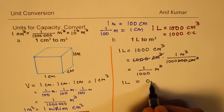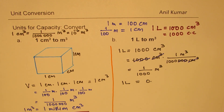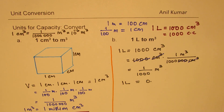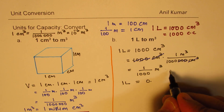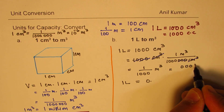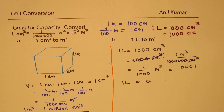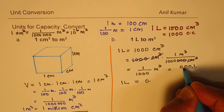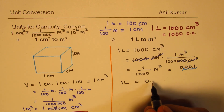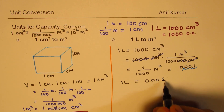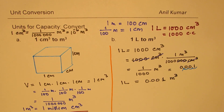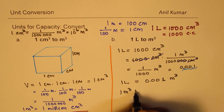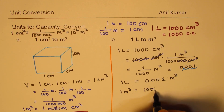Dividing by one thousand, we can also write one liter as zero point zero zero one meter cube. Think of it this way: the number is zero point zero zero zero zero zero one, and when dividing by one thousand the decimal moves three places, giving zero point zero zero one meter cube.